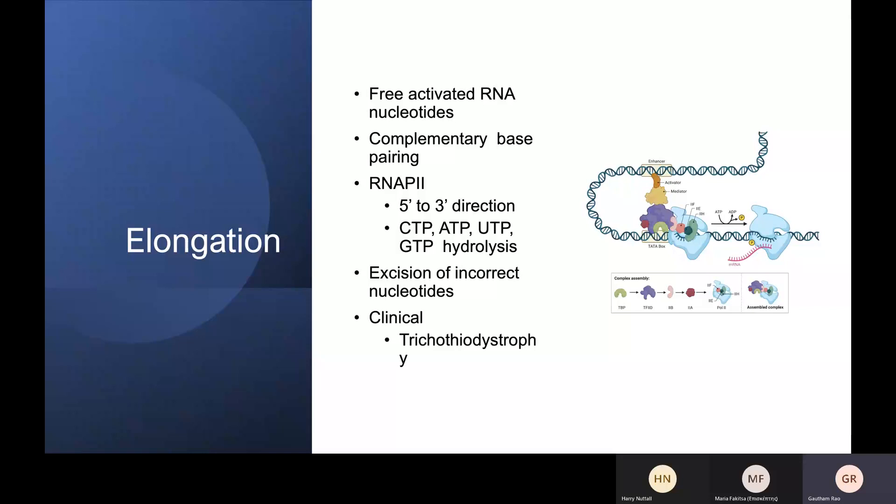In elongation, freely activated RNA nucleotides bind the DNA template strand and complementary base pairing occurs. RNA pol II catalyzes phosphodiester bond formation to extend the chain in a 5' to 3' direction, driven by hydrolysis of CTP, ATP, UTP, or GTP. If an error occurs, RNA pol II is able to move back and excise the incorrectly inserted nucleotide. Clinically, trichothiodystrophy is an autosomal recessive disorder caused by defects in genes coding for transcription factors that allow repair of RNA transcripts, presenting with intellectual disability and recurrent infections.